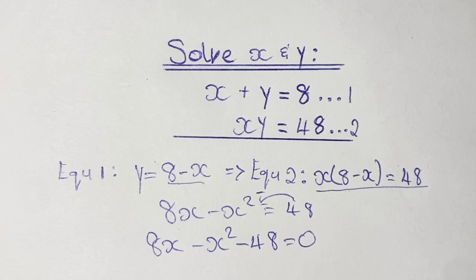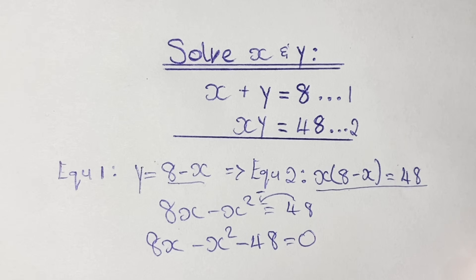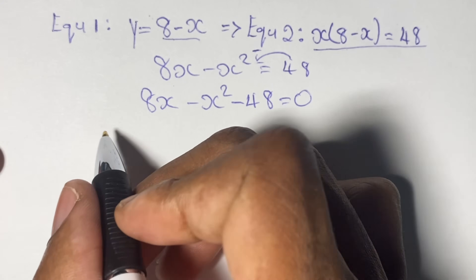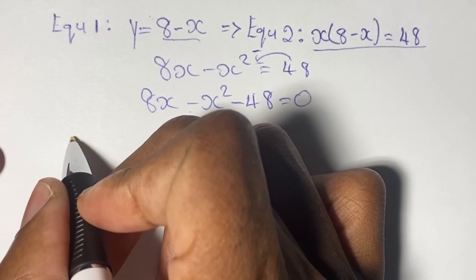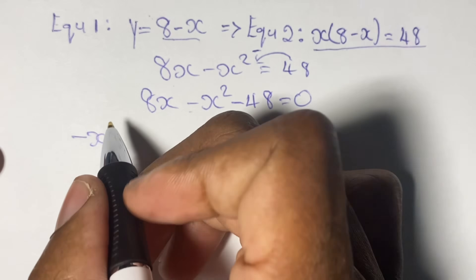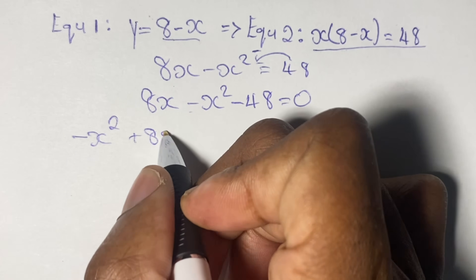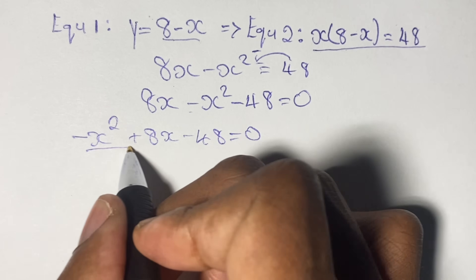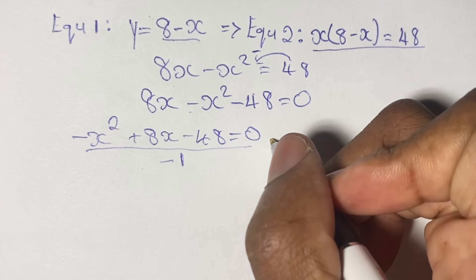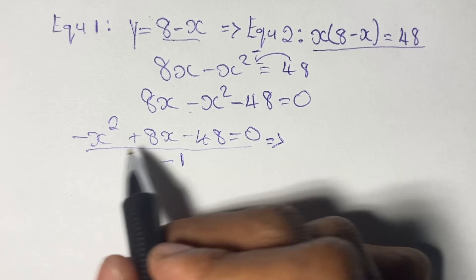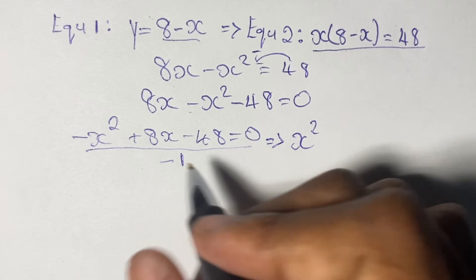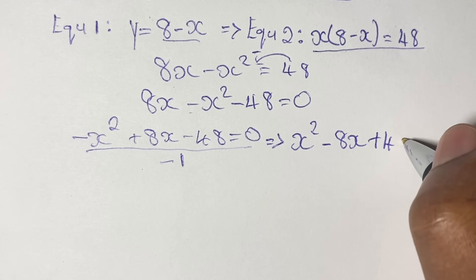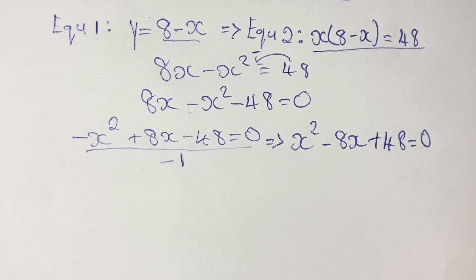As you can see, we now have a quadratic equation in the form ax squared plus bx plus c equals 0. We rearrange to put the negative x squared at the front: negative x squared plus 8x minus 48 equals 0. To make the leading coefficient positive, we divide through by negative 1, giving us x squared minus 8x plus 48 equals 0.